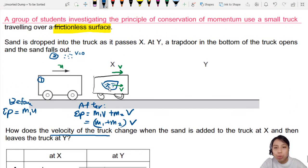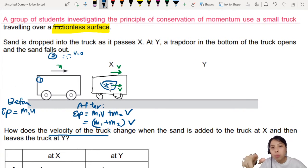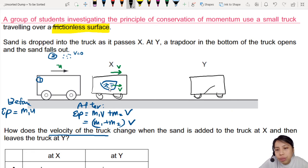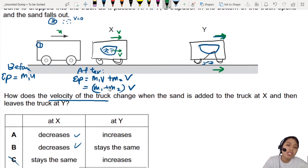Then we come to part 2. What happens? At Y, a trapdoor of the bottom of the truck opens and the sand falls out. So what's happening here? You have the truck moving, moving. Suddenly, when you come to this plot, a trapdoor opens. So I don't know how to draw the trapdoor. I draw like this. So all your sand has fallen out. Like that. Your truck will have some velocity and so will the sand. So what happened to the truck's velocity? Did it change or did it not?